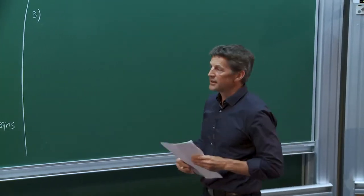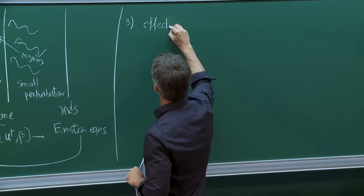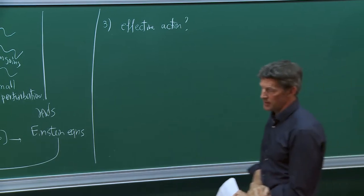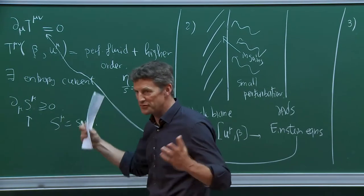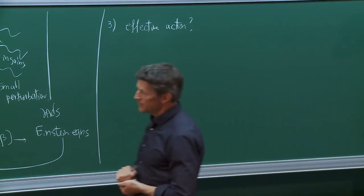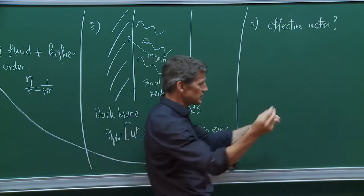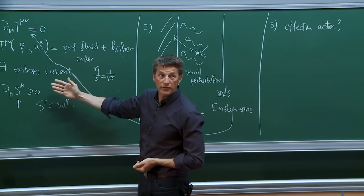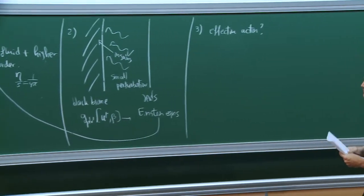There are several reasons why, instead of writing down these equations, you might want to try to write down an effective action — in the number of dimensions where the fluid lives, say 3+1. Because for example, in general in hydrodynamics there can be both statistical and quantum fluctuations that might be important. You might be interested to know correlations between different points in the fluid, and that sort of data is basically inaccessible at the phenomenological level but might be accessible if you have a proper effective action.